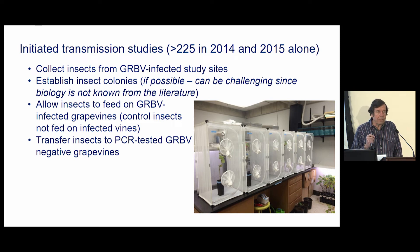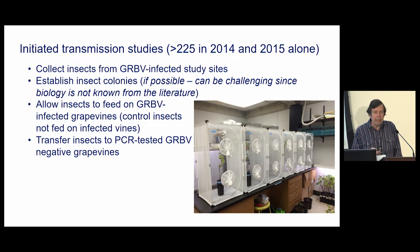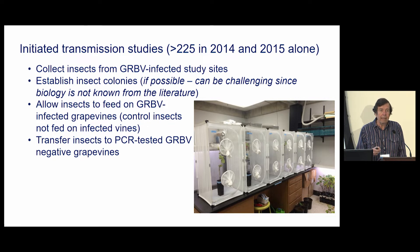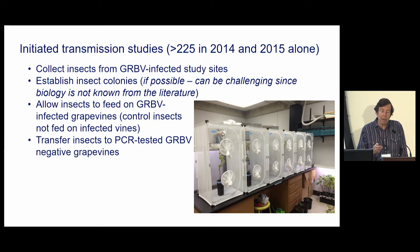In 2014 and 2015 alone, we did about 225 transmission studies using insects collected from a lot of these study sites where we believed spread was occurring. We had to try to establish insect colonies, and this ended up being exceedingly difficult because a lot of these insects were difficult to even identify, and many had no information in the literature about their biologies or feeding habits. So in most cases it was almost impossible to start colonies.